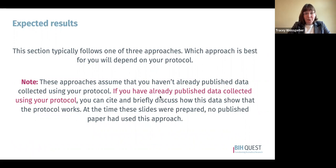The expected results section is a little more complicated. Published articles typically follow one of three different approaches, and which approach works best depends on the specific type of protocol. It's important to note that each of these approaches assumes you haven't already published data collected using your protocol. If you have, the instructions for authors note that you can cite that data and briefly discuss how it shows the protocol works.